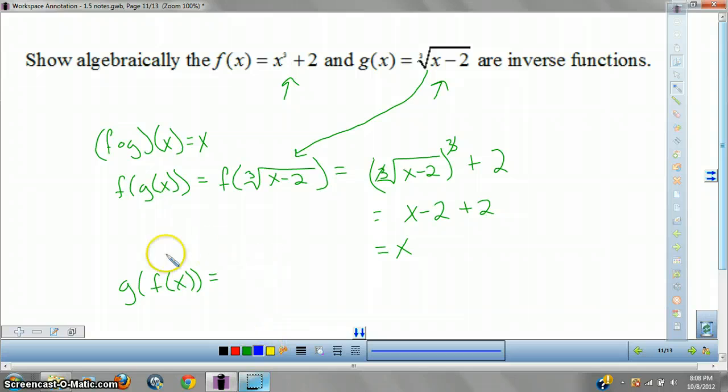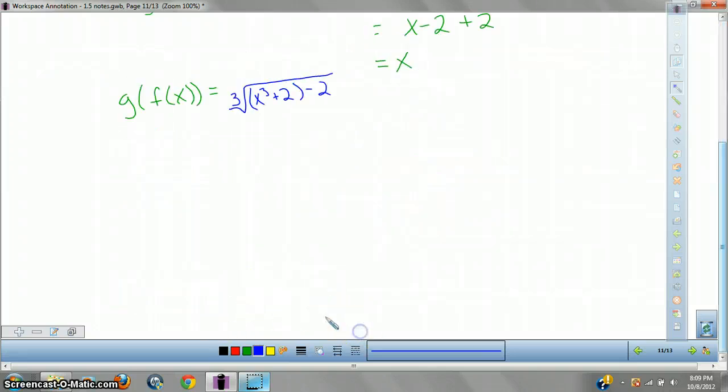Now, this one we're going to do kind of shortcut method. Remember, we're starting with this f of X. We're going to plug it in wherever we see an X. So let's go ahead and do that. So we get cube root of X cubed plus 2 minus 2. So we get cube root of X cubed. So we get X.